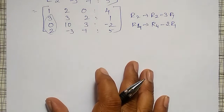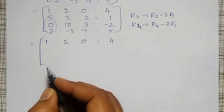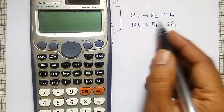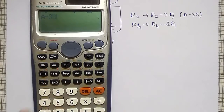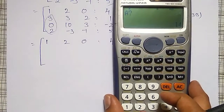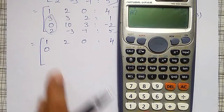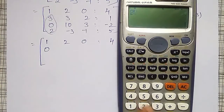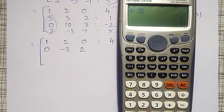To avoid confusion, let me use the calculator for that operation. The first row will remain as 1, 2, 0, 4. Using alpha A minus 3 times alpha B, where A represents R2 and B represents R1: the new R2 becomes 0, minus 3, 2, minus 11.